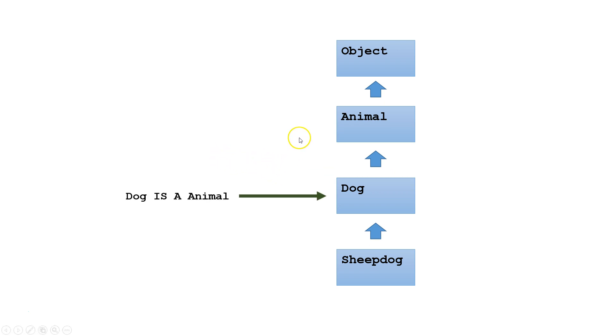Next, we have Dog, which is a subclass of animal. Dog is a animal. Finally, we have Sheepdog, which is a subclass of Dog. Sheepdog is a dog.